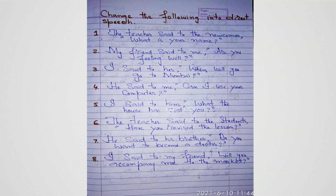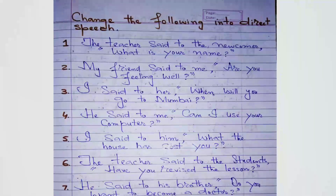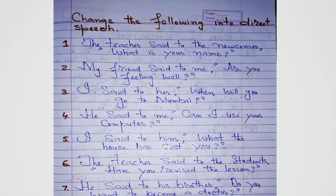Now page number 41 — here you have indirect sentences that you have to change to direct speech. That means you have to insert inverted commas and add a note of interrogation at the end, because these are all interrogative sentences. Question 1: He asked the newcomer what his name was — He said to the newcomer, 'What is your name?'